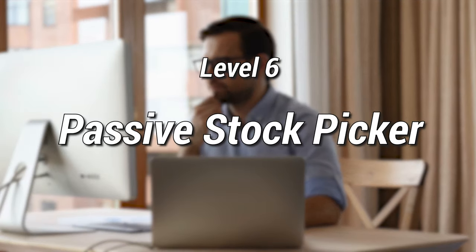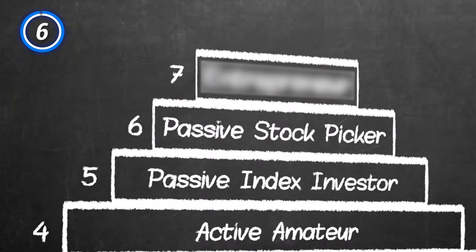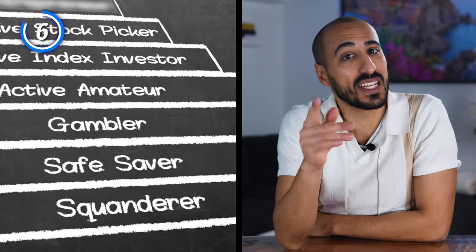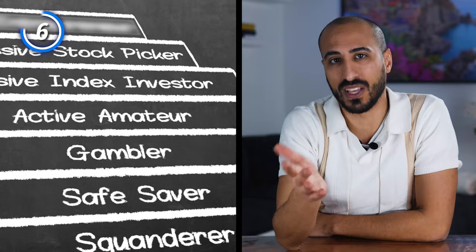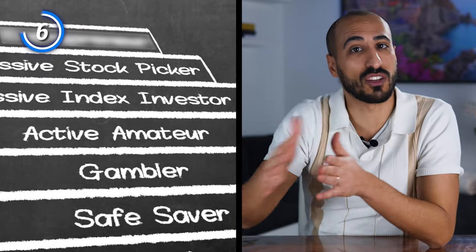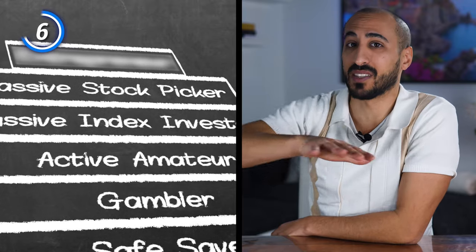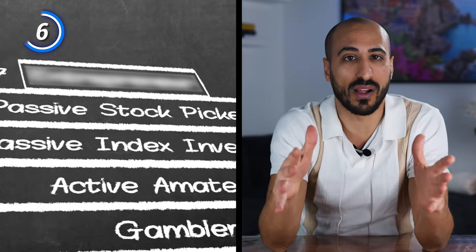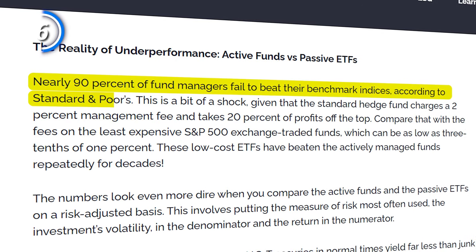Level 6 is the passive stock picker — the stock picker that buys and holds. Index investing is for most people the best and safest way to become wealthy, and I believe that's true. But this list is about the amount of wealth you can achieve, and there's no doubt that whoever manages to become a successful passive stock picker is going to achieve greater wealth than an index fund investor. Nearly 90% of hedge fund managers fail to beat their benchmark indices, which should remind us that getting to this level is quite a challenge. Passive stock pickers follow strict investing principles, have deep knowledge of finance, and never invest in a company unless they are 99% sure it's underpriced or its future potential is underpriced.